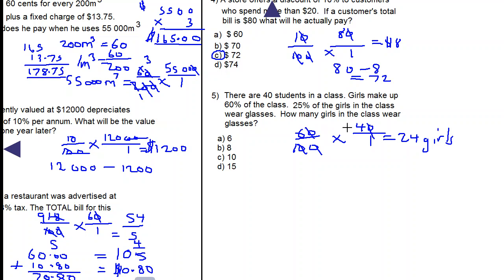25% of the girls in the class wear glasses. So now let's find 25% of the 24. 25% of 25 is 1. 25% of 100 is 4. 4 into 4 is 1. 4 into 24 is 6. So we have six girls who wear glasses. Our answer is A.